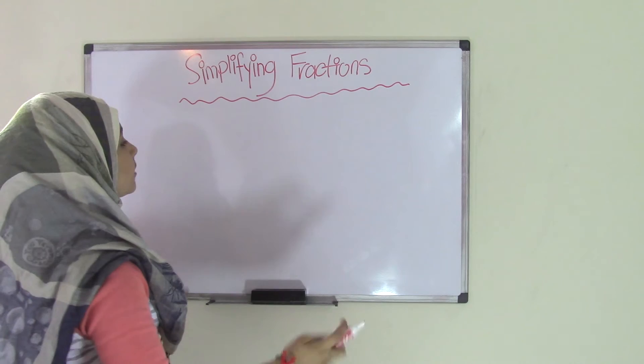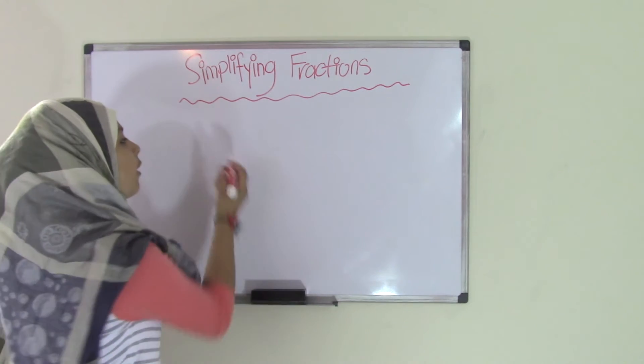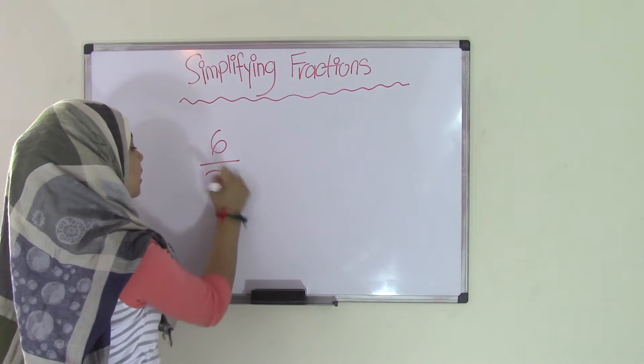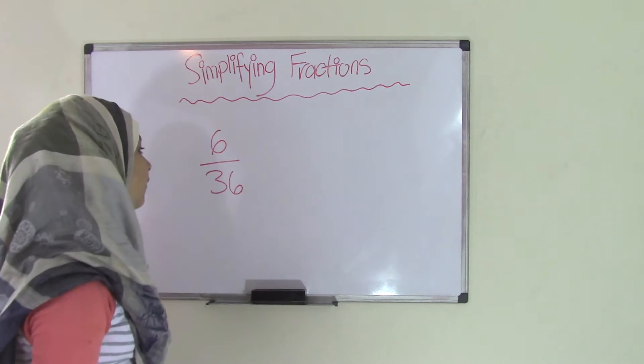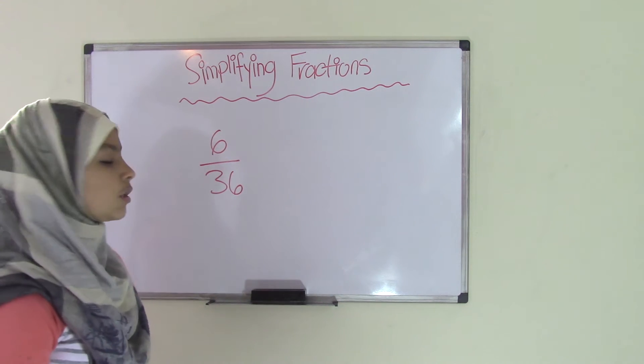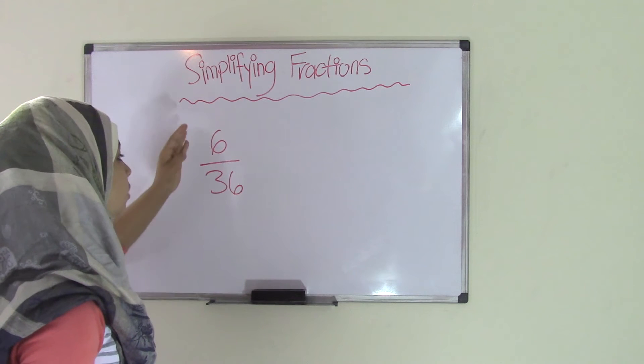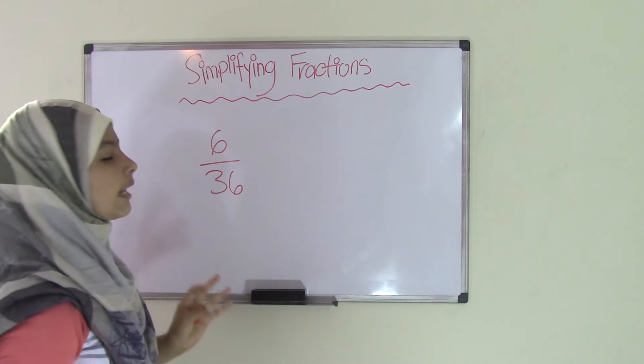So if you have for example, let's go with an easy example for now, maybe you have 6 over 36. To simplify this fraction what you will do is you have to come up with a number that you can divide both of these numbers by to get an equivalent fraction.